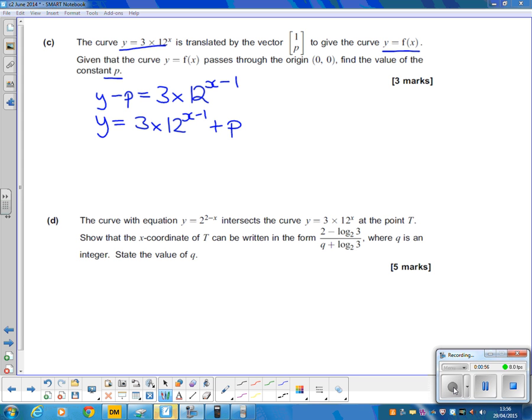Now they tell us that this curve passes through the origin. So we need to use the fact it goes through the origin. That means that y is 0 when x is 0.